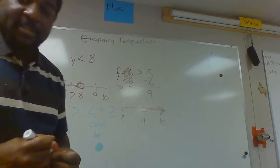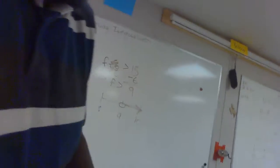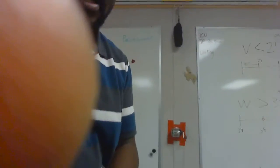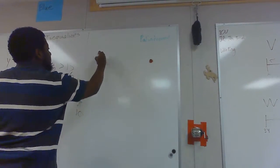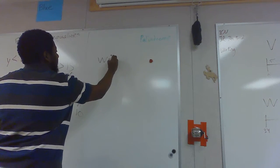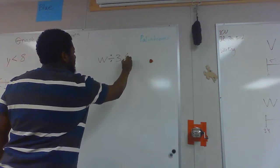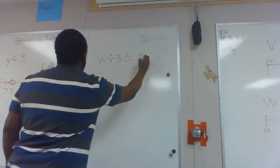I will do one more example of this just in case you didn't pick it up the first time, but it really is just putting those two skills together that we talked about in class last week. So I'm going to draw one more up here. This time I'll use w divided by 3 is less than or equal to 15.